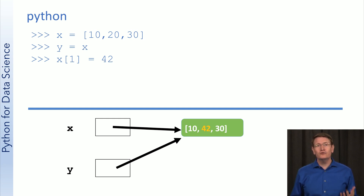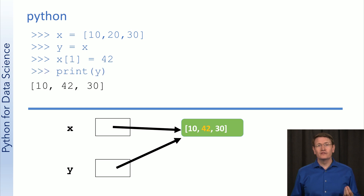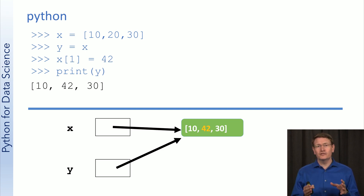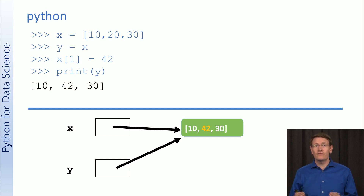What's interesting about this example is that y is also pointing to that same list. So when we go to print the list pointed to by y, we'll get back this changed list. If you have two references pointed to the same object, mutating that object will obviously affect both references.